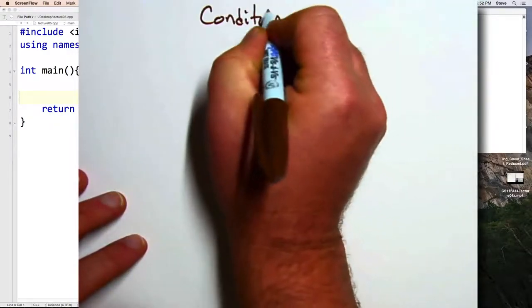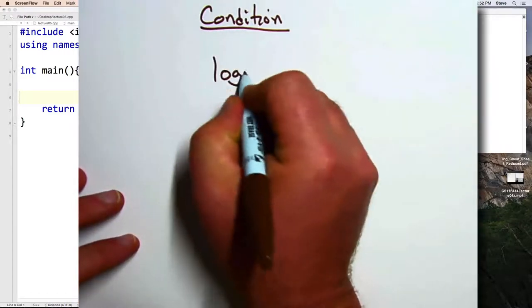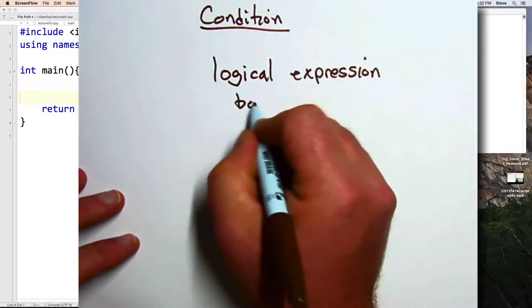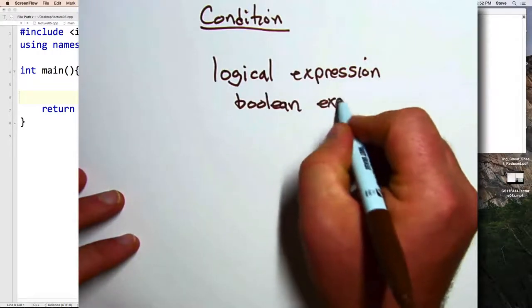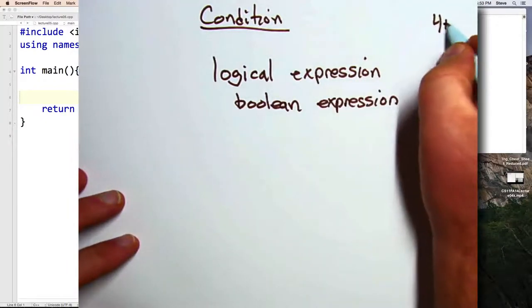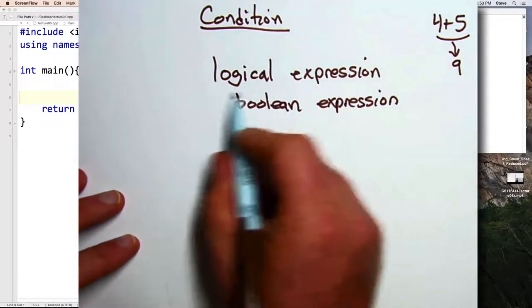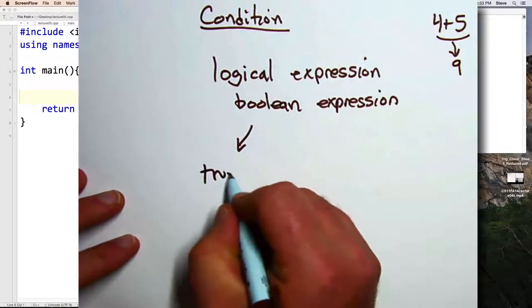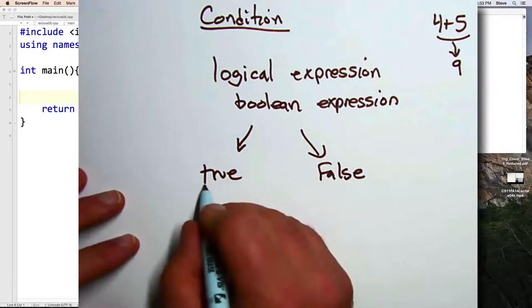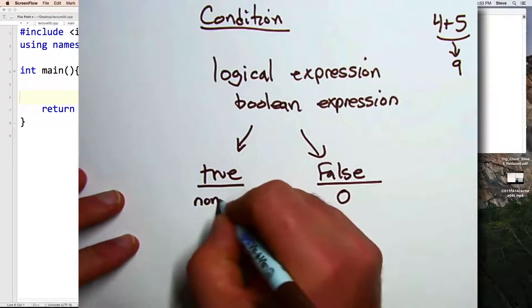In order to test some kind of condition, we're going to need to know about a couple of different things. The first thing is a logical expression, also known as a Boolean expression. Previously, we've seen arithmetic expressions, such as 4 plus 5, that would evaluate to 9. Today, we're going to talk about logical expressions. This is an expression that evaluates to either being true or false. And if you want to get technical, in C++, true or false is actually equivalent to a 0 or non-zero value.